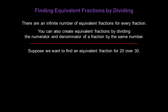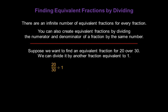Suppose we want to find an equivalent fraction for a larger fraction, like twenty over thirty. We could certainly multiply the top and bottom by the same number, but in this case, let's go ahead and divide it by another fraction equivalent to one. So let's divide twenty over thirty by two over two. Our numerator then becomes twenty divided by two, while the denominator is thirty divided by two. Twenty divided by two gives us ten, and thirty divided by two gives us fifteen. So ten fifteenths is equivalent to twenty over thirty.